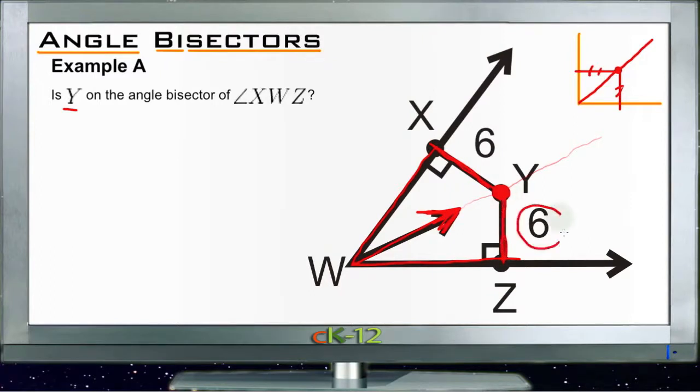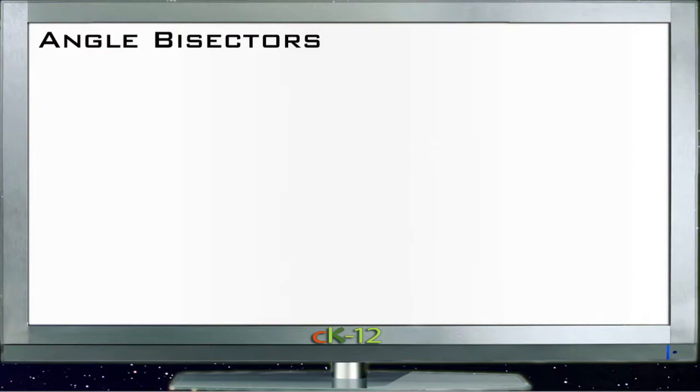Those two lines are the same length—they're both six units long. So since this line is congruent to this line, and Y is their intersection, Y must also be the same distance from each side of the angle, which means that it's on that angle bisector. So the answer is yes.